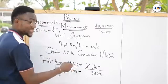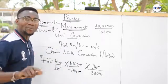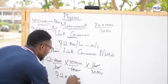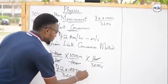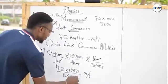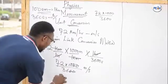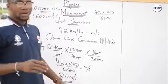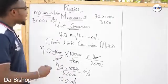Now you can see the resulting units: meters at the numerator and seconds at the denominator. Multiply all parameters at the top and all parameters at the bottom: 72 × 1000 ÷ 3600. Using your calculator — 72000 ÷ 3600 — we get 20 meters per second. This is how the chain link conversion method works.